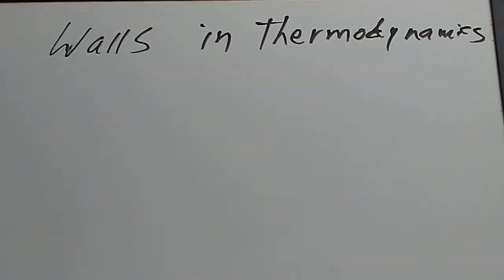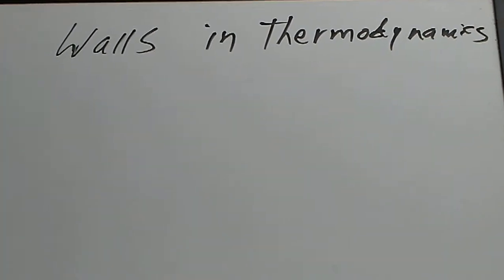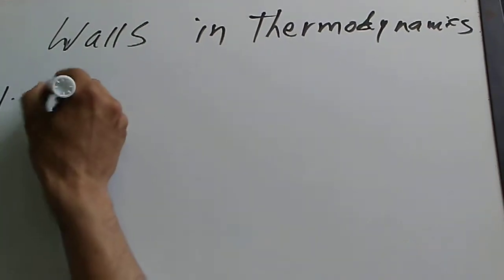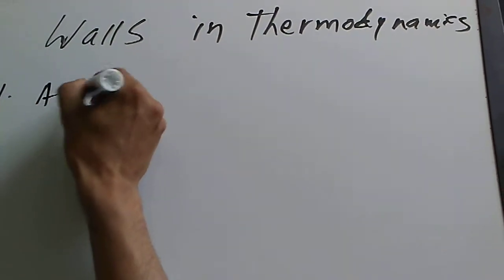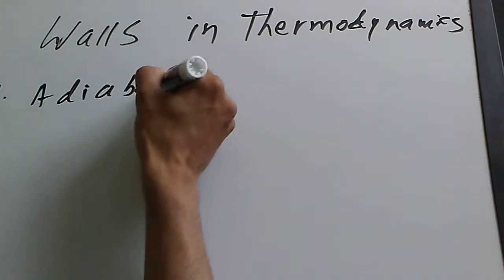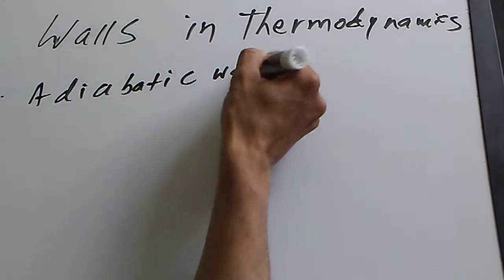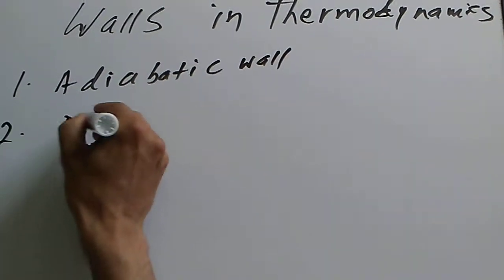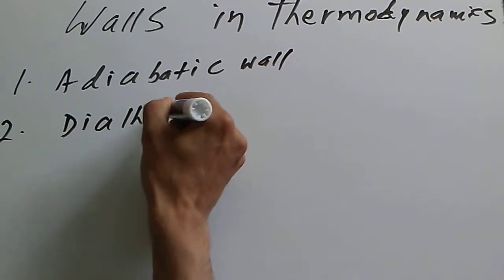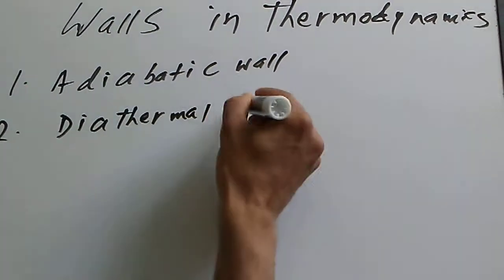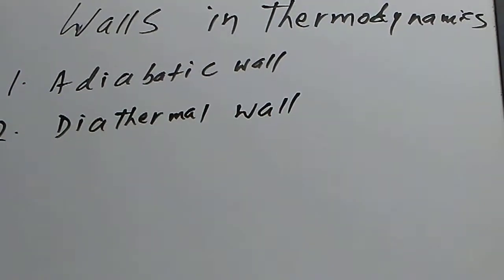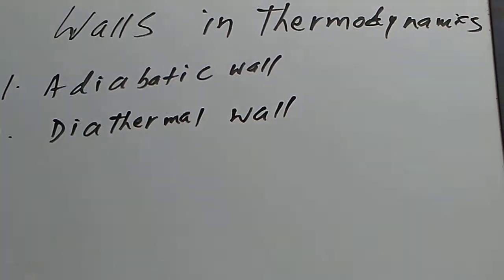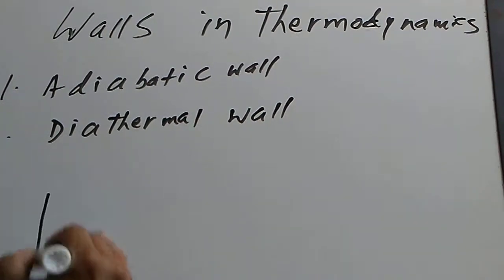I'm going to talk about the walls in thermodynamics today. There are two types of wall in thermodynamics: one is the adiabatic wall, and the second one is the diathermal wall.